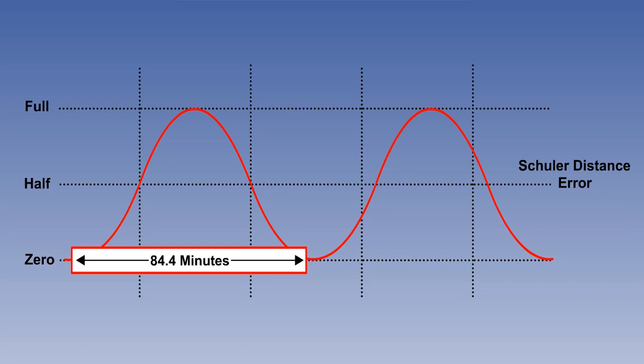Therefore it does not matter whether your INS was designed by Honeywell, Delco, Litton, or anyone else. It will have to have a V over R feedback loop to keep the platform level as it travels over the Earth. And if the platform is not level at the start, there will always be an oscillation with a period of 84.4 minutes. This is called the Schuller period.